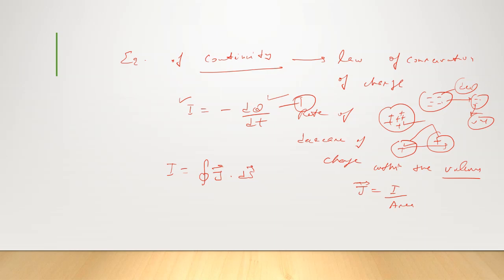In integral form, I equals the integral of J·dS, where J is the current density and dS is the small element of area through which current is flowing out. Also, charge Q is related to volume charge density ρ by Q = ∫ρ dV, where ρ is the volume charge density, i.e., Q divided by dV.